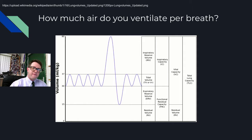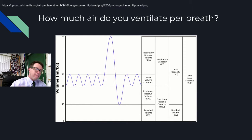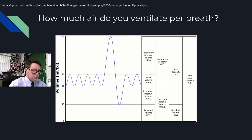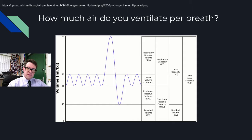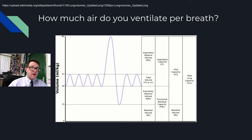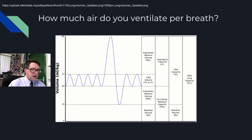When we breathe, we have various volumes we can breathe in. What you breathe right now — normal breathing — is called your tidal volume. There's also a lot more air you could breathe in that you normally don't, called your inspiratory reserve. Similarly, you can breathe out more air than normal, called the expiratory reserve volume. All three — your inspiratory reserve, tidal volume, and expiratory reserve — constitute your vital capacity, which is all the air you are capable of moving.